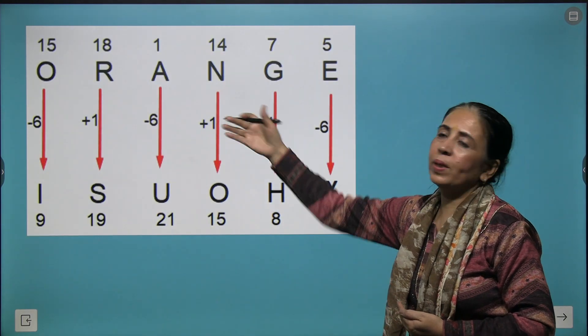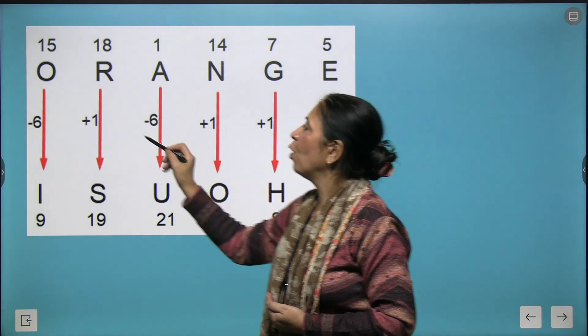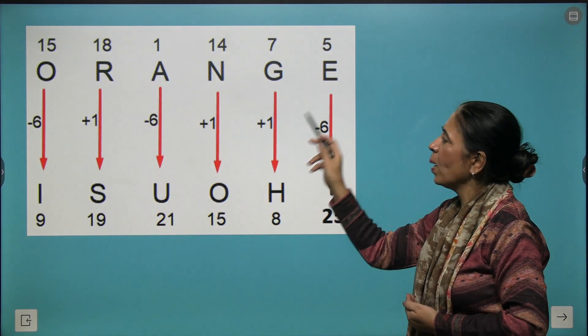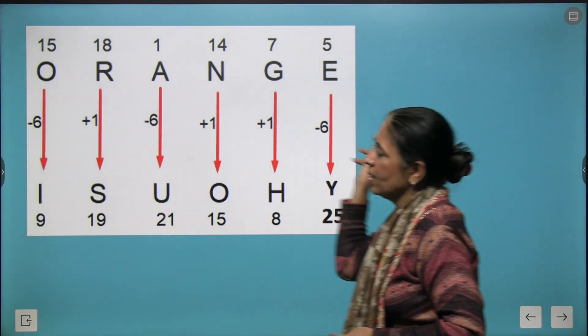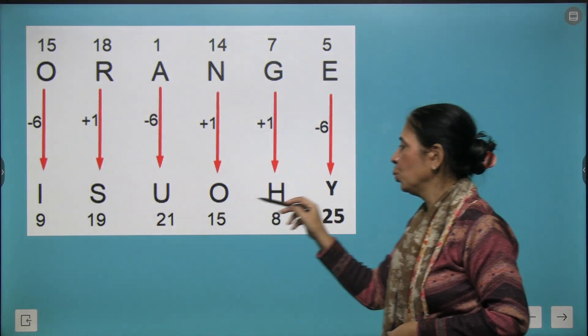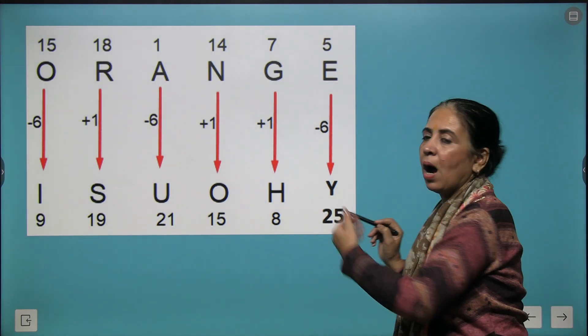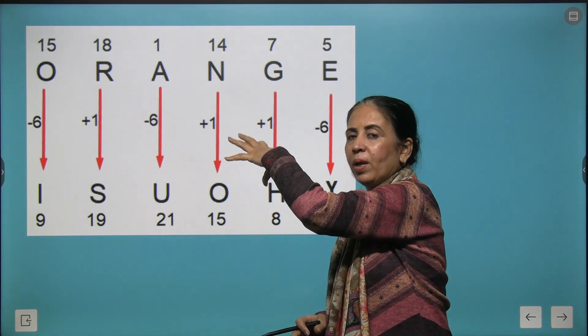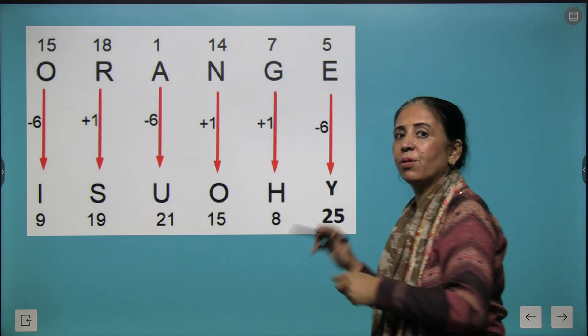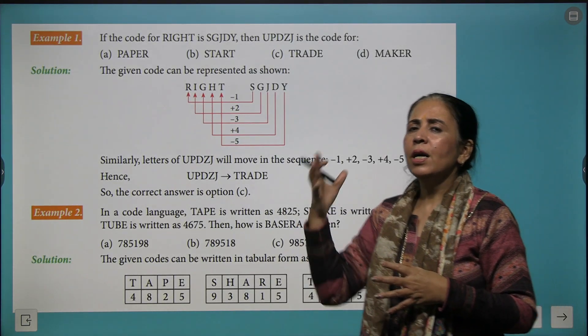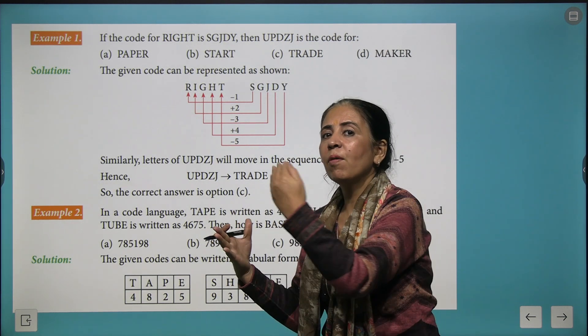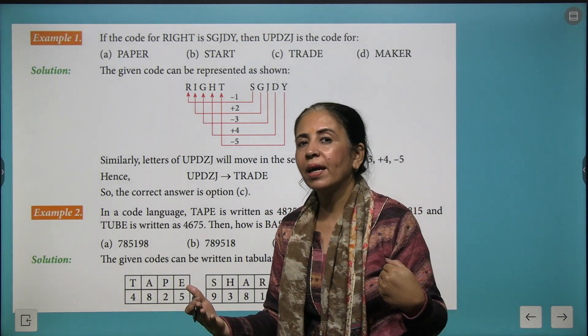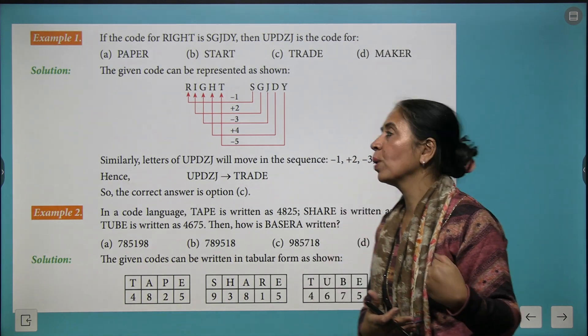Moving ahead with another example. Here we have followed a pattern of minus 6, plus 1, minus 6, plus 1, plus 1, minus 6. And then ORANGE is written as ISUOHY. This is how you write a code. All the words following this coding-decoding will be formed using the same pattern. Remember this thing: you have to first decode the message and understand what symmetry is created. Once you understand the symmetry, your cracking of new codes will become easier.